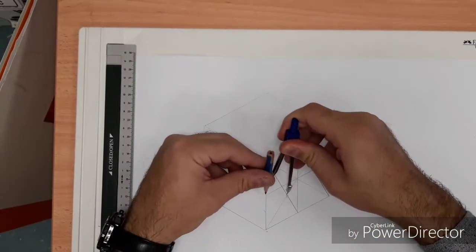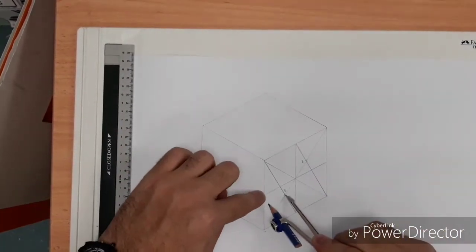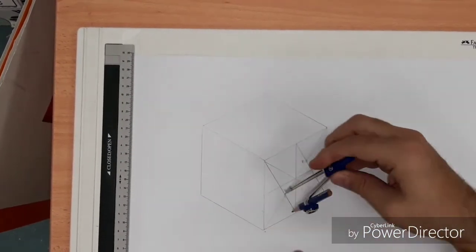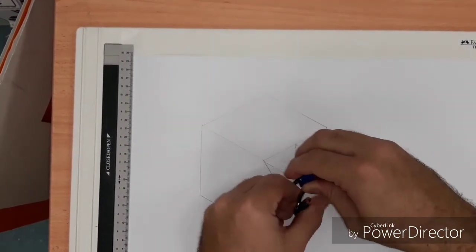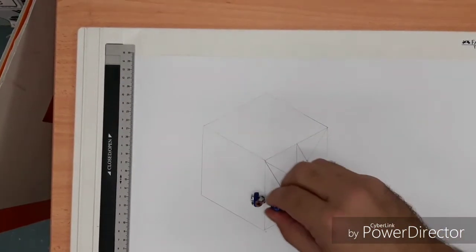Then you take the tip or the pencil of your compass and you position it basically on this line that goes through the middle of the square. You could also start it from positioning down here, either or acceptable. So I'm ready to make an arc.